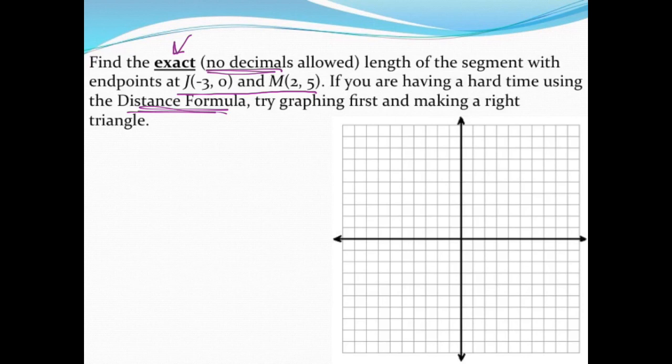Hopefully from your notes you remember that the distance formula is the square root of x1 minus x2, that's negative 3 minus 2 squared, plus y1 minus y2 squared, that's 0 minus 5 squared.